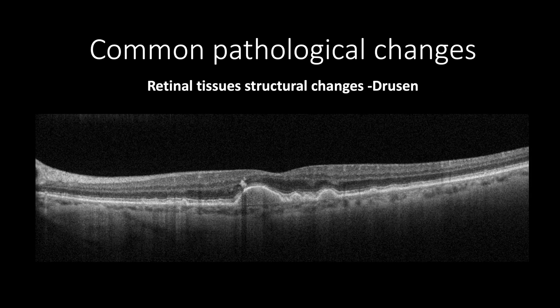OCT is one of the best methods to diagnose, accurately measure, and locate drusen. This OCT cross-section shows drusen in different sizes and shapes. Hard or small drusen appear as a small area of drusenoid material deposited between the RPE and Bruch's membrane with a size no more than 63 microns. In contrast, soft or larger drusen appear more homogeneous with an increased size between 63 and 124 microns. Soft drusen may combine with ellipsoid zone disruption and intraretinal pigment migration. When large amounts of drusenoid material accumulate between the RPE and Bruch's membrane, it forms drusenoid RPE detachment, which can reach a size of half a disc diameter.